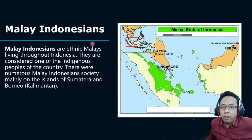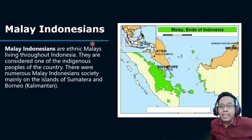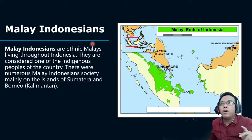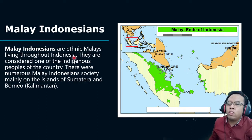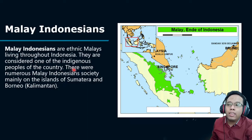In this paper, we mainly discuss Malay Indonesian Architecture. Indonesia is a country in Southeast Asia and the 4th most populous country in the world. One of its populations is Malay Indonesians, an ethnic Malay living throughout Indonesia, considered one of the indigenous peoples of the country. The Malay Indonesian society mainly lives on Sumatra Island.